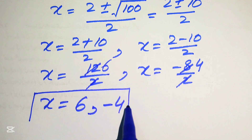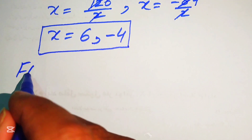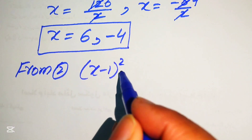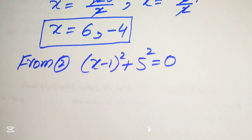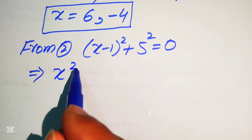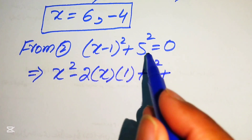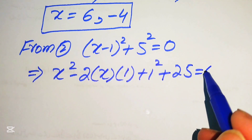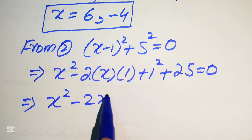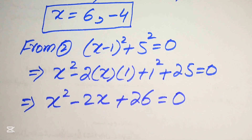Now moving to Case 2, Equation 2: (x minus 1)² plus 5² equals 0. Expanding using the square identity gives x² minus 2 times x times 1 plus 1² plus 25 equals 0, which simplifies to x² minus 2x plus 1 plus 25 equals 0, so x² minus 2x plus 26 equals 0.